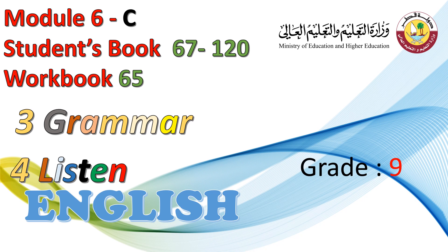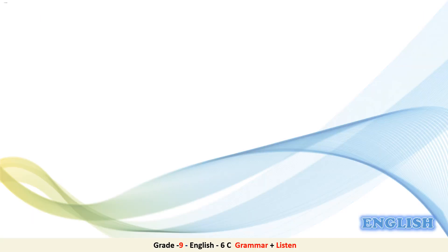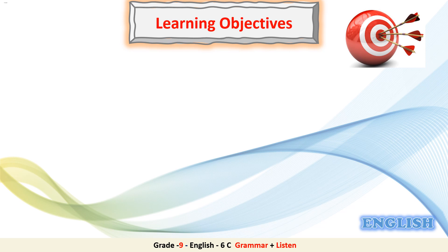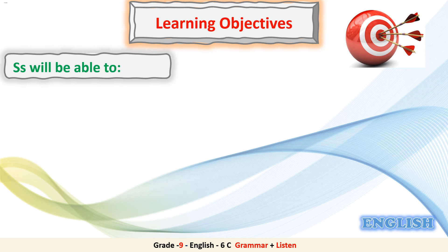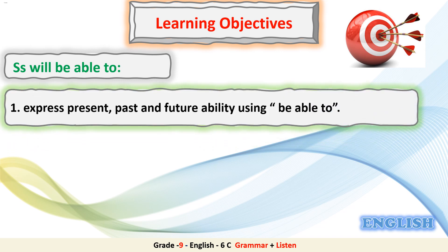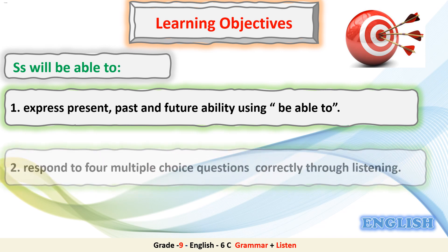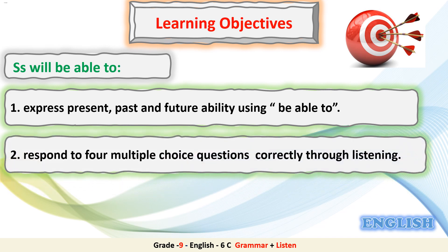As-salamu alaykum wa rahmatullahi wa barakatuh. Welcome back, Grade 9 students. Our lesson today is Module 6C, Students' Book pages 67 and 120, Workbook page 65, Grammar 4 lesson. These are the learning objectives we are going to achieve today. By the end of this lesson you will be able to express present, past, and future ability using 'be able to,' and respond to four multiple choice questions correctly through listening. Let's get started.